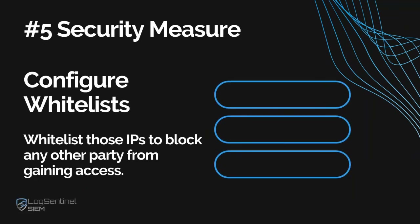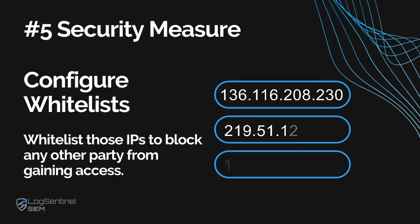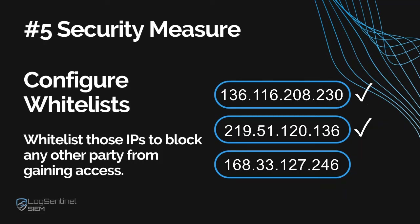The fifth and final security measure is to configure whitelists. Often, you know where you are going to need access from — whitelist those IPs to block any other party from gaining access.